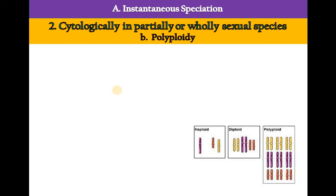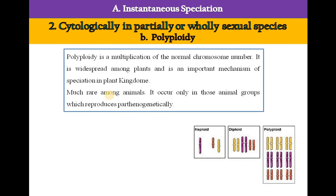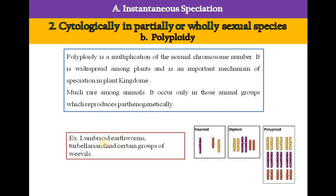The second cytological mechanism of instantaneous speciation is polyploidy — a multiplication of the normal chromosome number. It is widespread among plants and is an important mechanism of speciation in the plant kingdom, but comparatively rare among animals, occurring only in those animal groups that reproduce parthenogenetically. Examples include lumbricid earthworms, turbellarians, and certain groups of weevils.